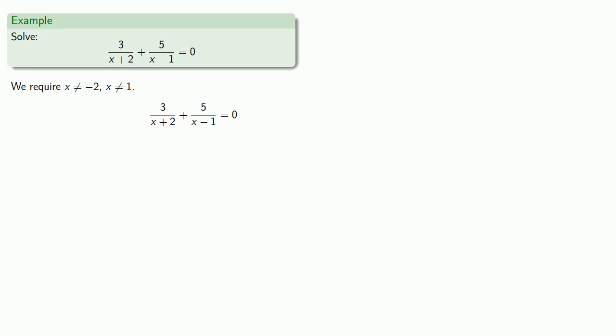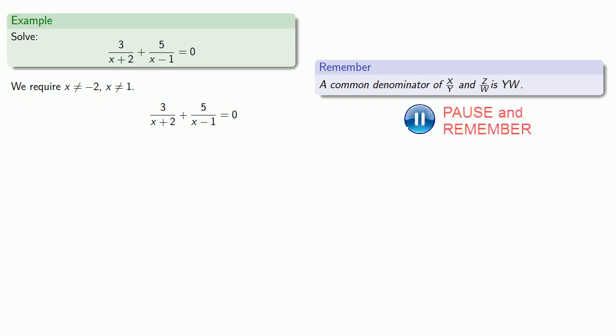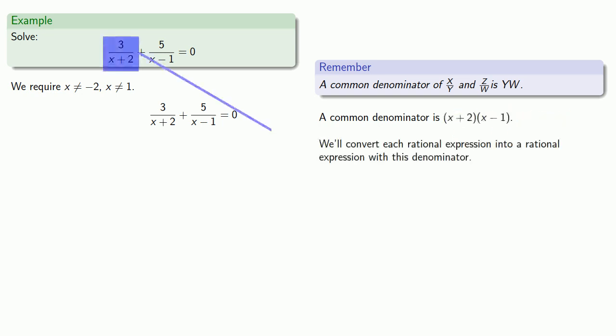And that means you have rational expressions that do not have the same denominator. And so we have to find a common denominator. And the thing to remember is that a common denominator of x over y and c over w is the product of the two denominators. And so a common denominator will be x plus 2 times x minus 1.